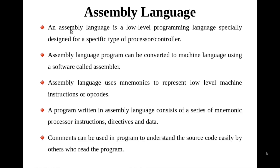What is an assembly language? An assembly language is a low-level programming language specially designed for a specific type of processor or controller. It will be there for a microprocessor or even for a microcontroller. An assembly language program can be converted to machine language using a software called an assembler, which generates machine codes, because the machine will only understand machine codes.